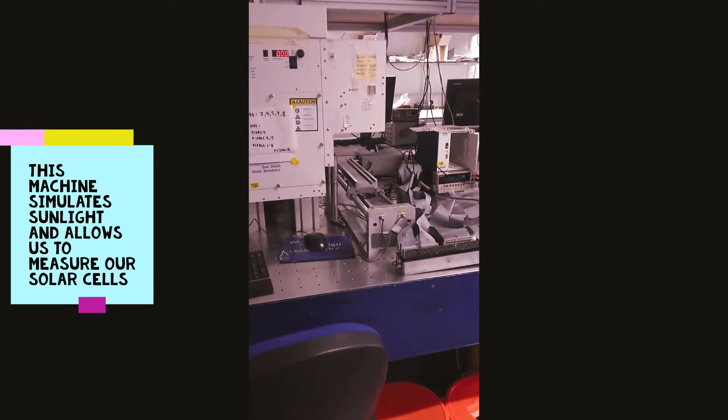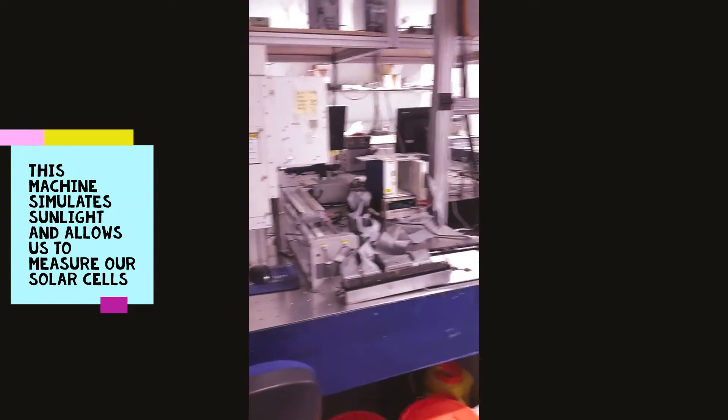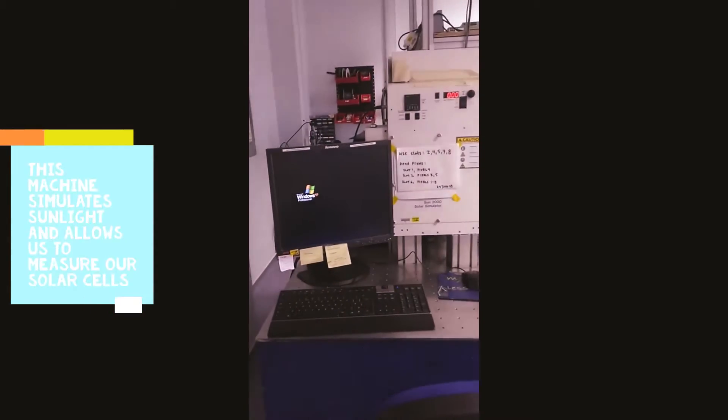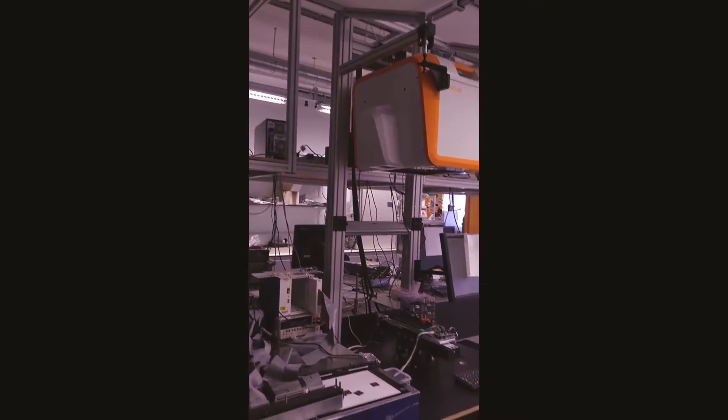So we make mini solar panels which we call solar cells, and I'll call them that throughout. We basically have this machine we're looking at here, and that machine simulates sunlight and allows us to measure how well our solar cells work if they were going to be put outside. We basically shine this huge light on them and then measure the electricity that comes out, and that allows us to work out how well they're doing at converting sunlight into electricity.